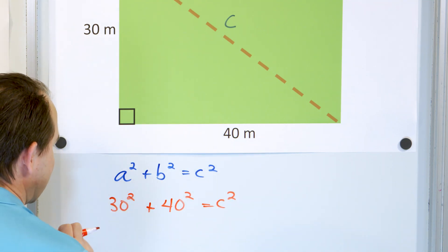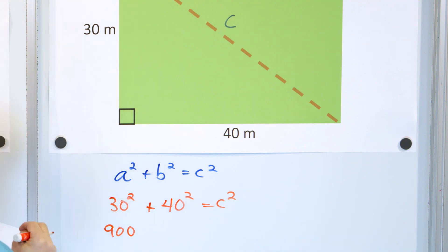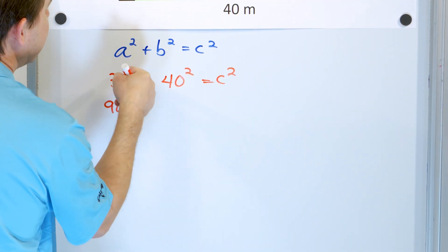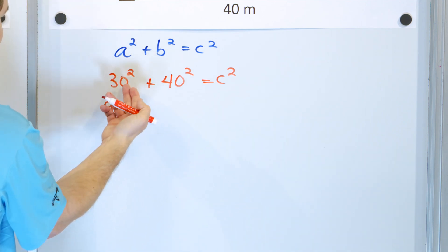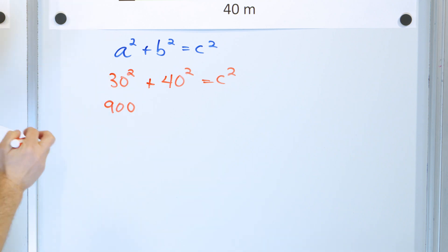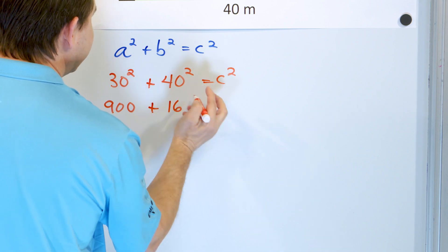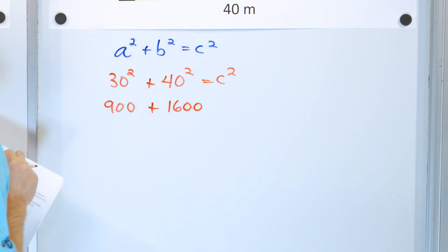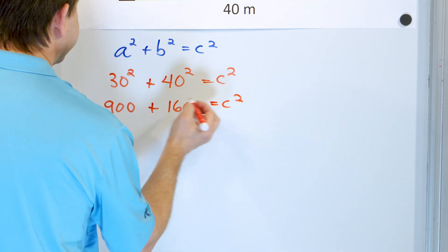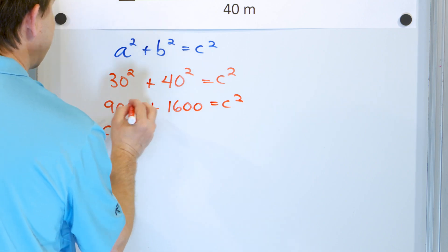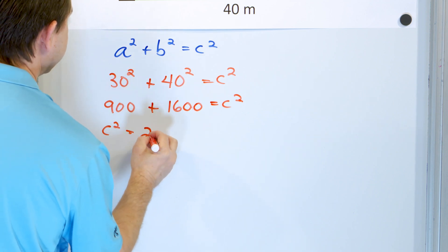Since 3 × 3 = 9, then 30 × 30 = 900. If you're not sure, use a calculator. Similarly, 4 × 4 = 16, and squaring two zeros means 40² = 1600. So flipping it around, c² = 900 + 1600. Since 9 + 16 = 25, we get 900 + 1600 = 2,500. So c² = 2,500.